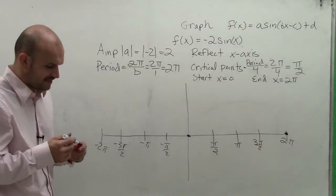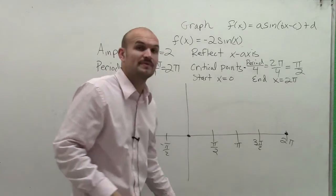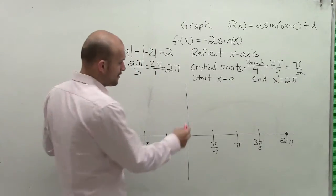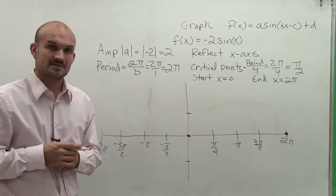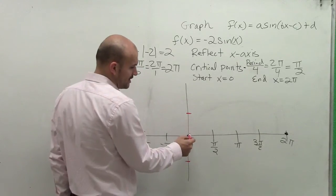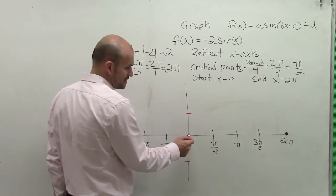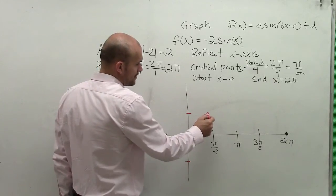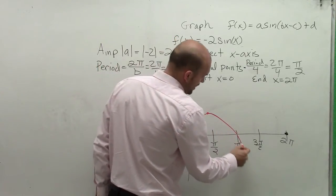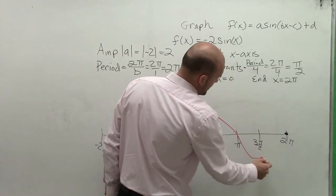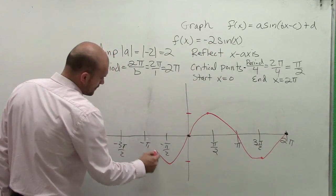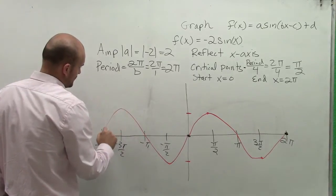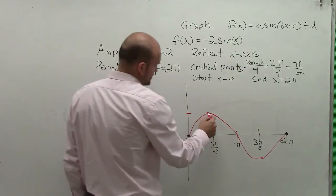So to graph this, it's always helpful to kind of remember what the parent function looks like. And remember our parent function of sin(x) went up to 1 and down to -1. It always started, or it crossed at the origin (0, 0), and immediately went up to here, crossed at π, went down to 3π/2, and then came back up. And then in the negative direction, followed the same pattern, where we had our maximum and our minimum points.